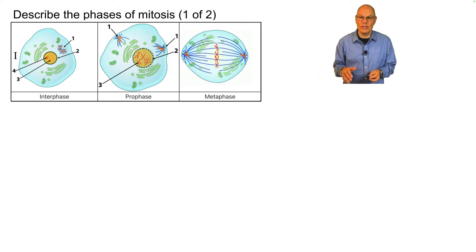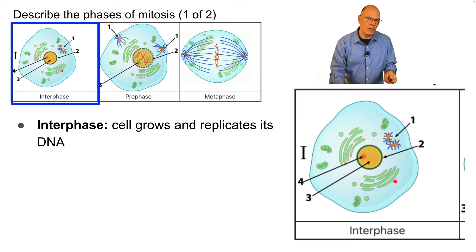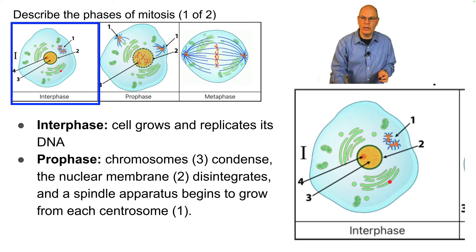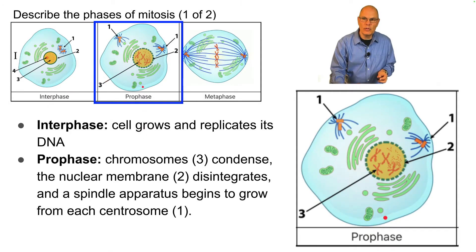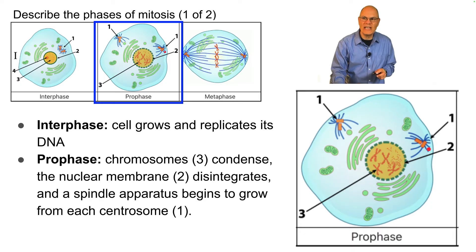Describe the phases of mitosis. We begin with interphase, during which the cell grows and replicates its DNA. It doesn't look as if it's dividing, but DNA replication has occurred. During prophase, chromosomes, which are spread out as chromatin during interphase, condense into these X-like structures. The nuclear membrane disintegrates, and a spindle apparatus — these fibers — starts to grow from each centrosome.